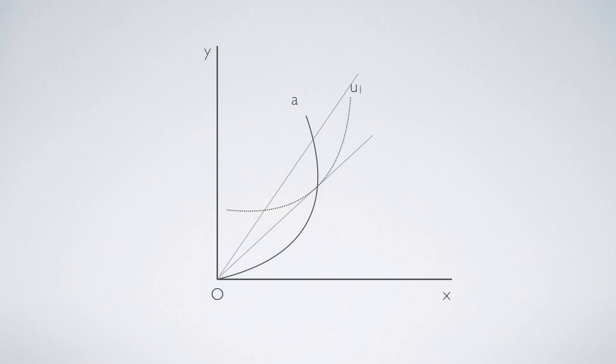When the price line is steeper, the associated indifference curve must also be tangent to this line on curve A.